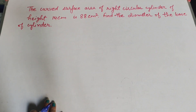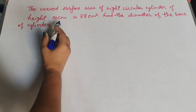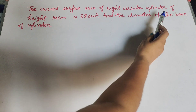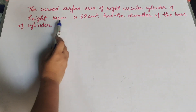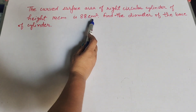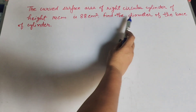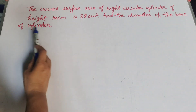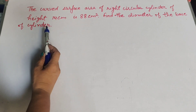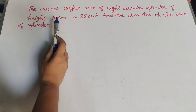Hello friends, welcome to my channel. In this video we discuss: the curved surface area of a right circular cylinder of height 14 cm is 88 cm square. Find the diameter of the base of the cylinder.